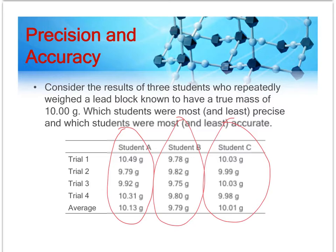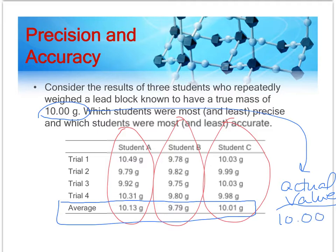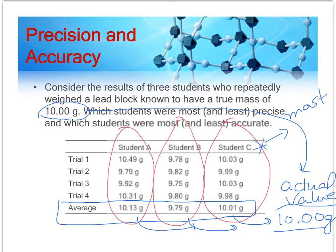The first thing I always look at is what the average values are for the experiments compared to what the actual value is supposed to be. If I put another column here — actual value — that's some known value from a book, and it's supposed to be 10.00. Accuracy is how close you are, A and C, to the actual value. So which student obtained an average value closest to the known value? Clearly it was student C. So student C is the most accurate because their average was closest to the known value.